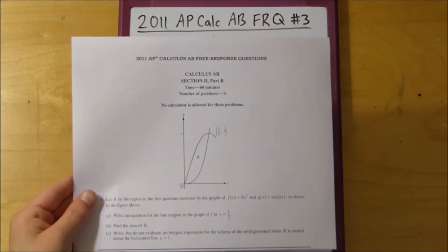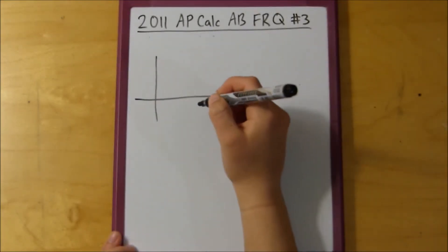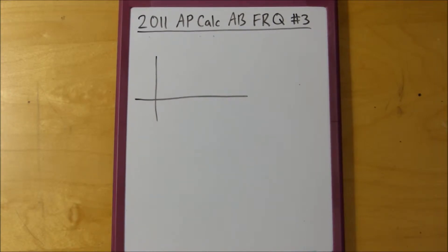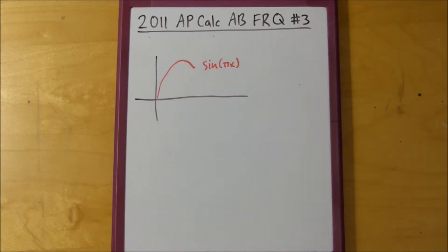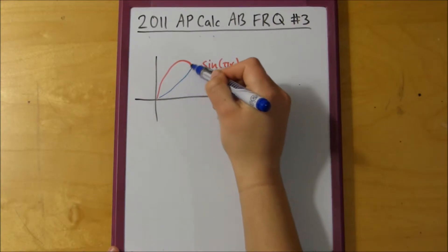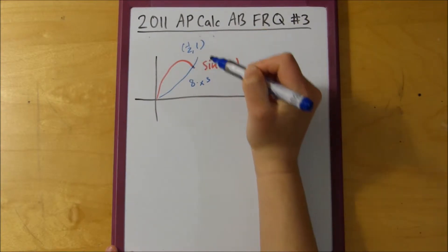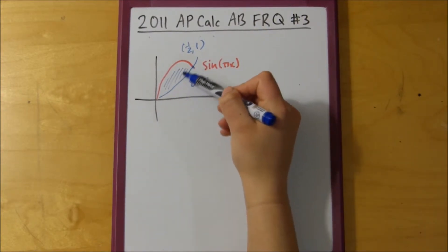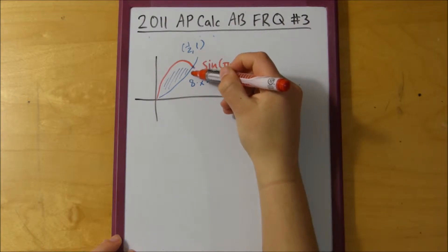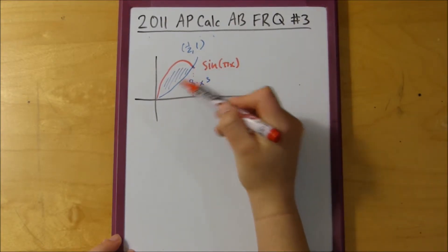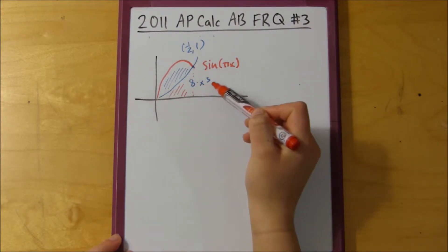Now we're being asked to find the area of R. So what we do is if I make a little mini r, so here's our coordinate plane, and we have our sine of pi x, and then 8 times x to the third here, and they intersect at 1 half, 1, we're asked to find the area of this. So essentially, what we can rewrite this as is we're trying to find the area underneath sine of pi x, and then just subtract the area underneath 8 times x to the third.